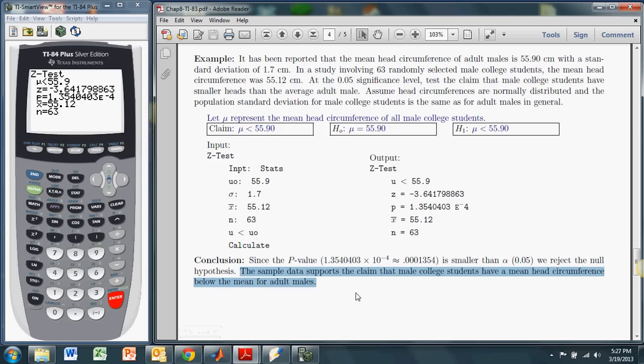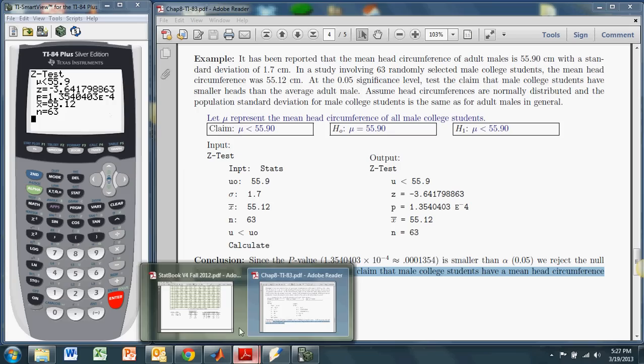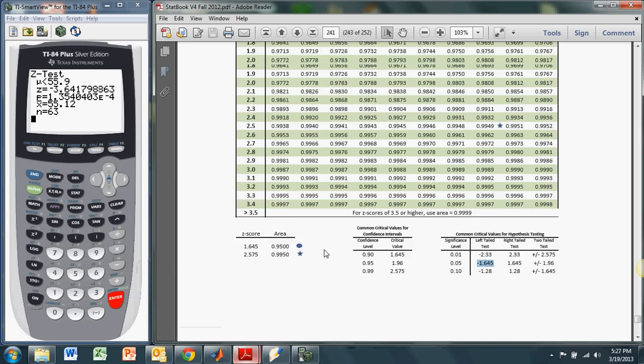The one thing the TI doesn't do, and I sort of wish it did, was it doesn't give you the critical values of z. But if we have one of the tables like we do in the book, the critical values are very easy to find, right? They're right below the z table here.